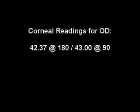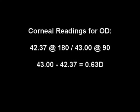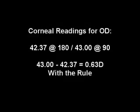Once you have completed your horizontal and vertical readings, we can now interpret those measurements. First, determine if the two principal meridians are 90 degrees apart. Since 180 and 90 are 90 degrees apart, we have regular astigmatism. Since the horizontal meridian is flatter than the vertical meridian, we have with-the-rule astigmatism. The difference between the two principal meridians indicates the amount of corneal astigmatism: 43 minus 42.37 equals 0.63 diopters. So we have 0.63 diopters of with-the-rule corneal astigmatism for the right eye. Now you do the left.